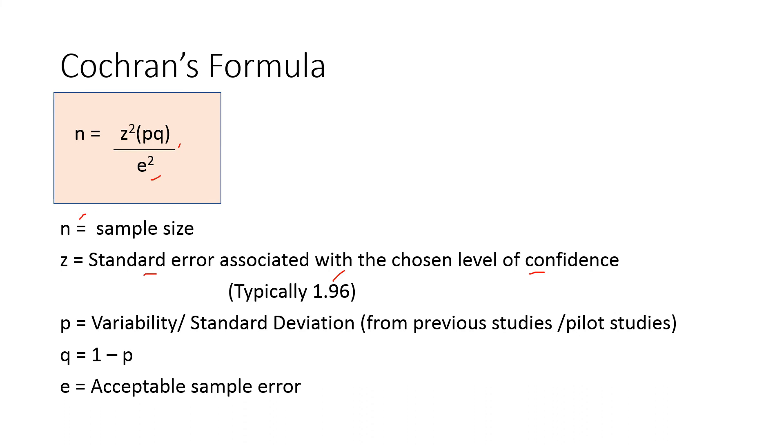P is the variability or the standard deviation which we are getting from the previous studies or the pilot studies. Q is equal to 1 minus p, and e is the acceptable sample error. So the formula n equals z square pq divided by e square, and that is Cochran's formula.